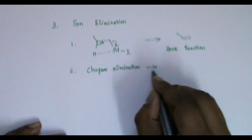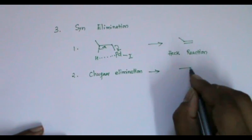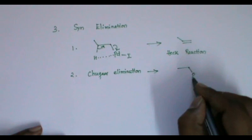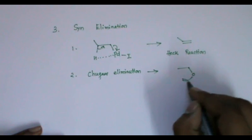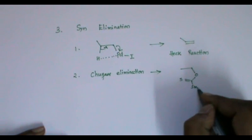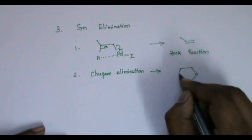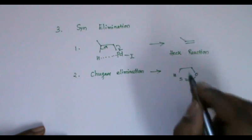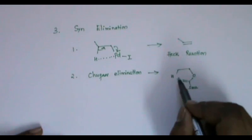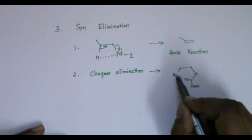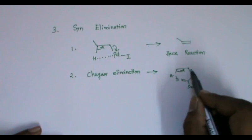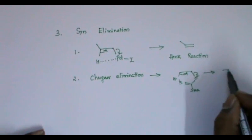The second syn elimination involves a xanthate ester. The xanthate and the hydrogen must be cis to each other. In such a case, the hydrogen is removed along with the xanthate and what we get is an olefin.